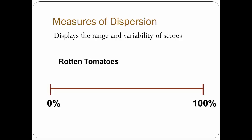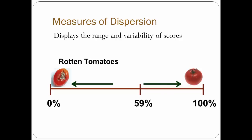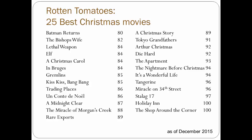Movies rated on the low end of the scale are considered rotten. Rotten Tomatoes establishes the cutoff point at 59% — if a movie is rated 59% or lower, it's classified as rotten, while those rated at 60% or higher are classified as fresh. Unfortunately, the cute images can't be shown due to copyright issues. Here is the list of movies that Rotten Tomatoes identified as the 25 best Christmas movies, along with their ratings.